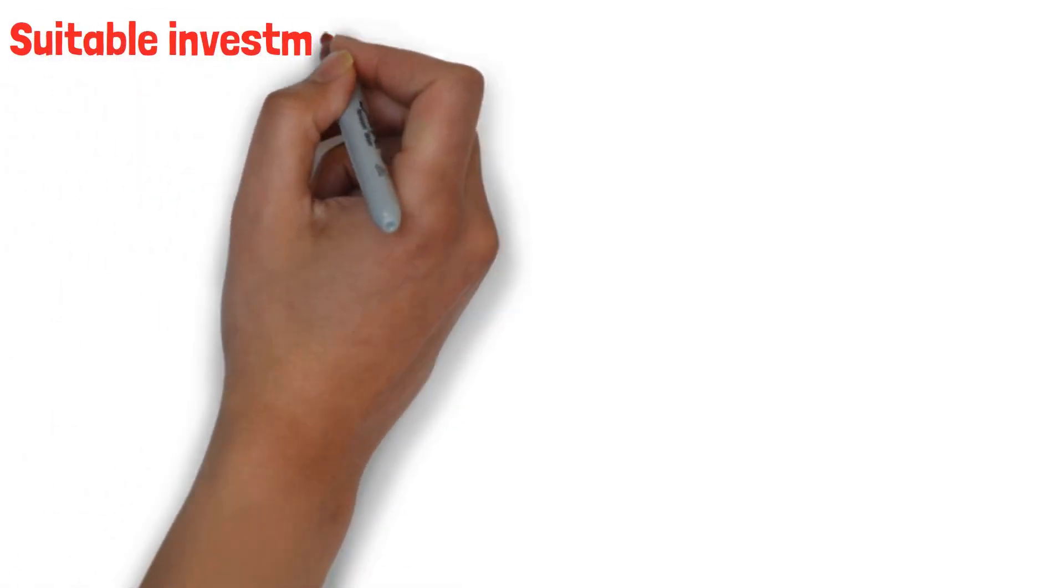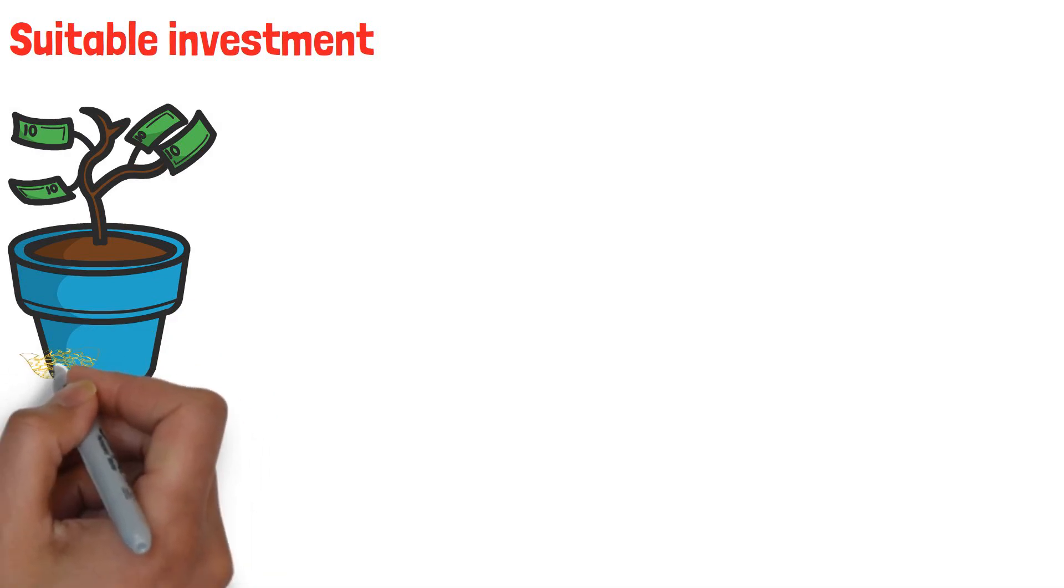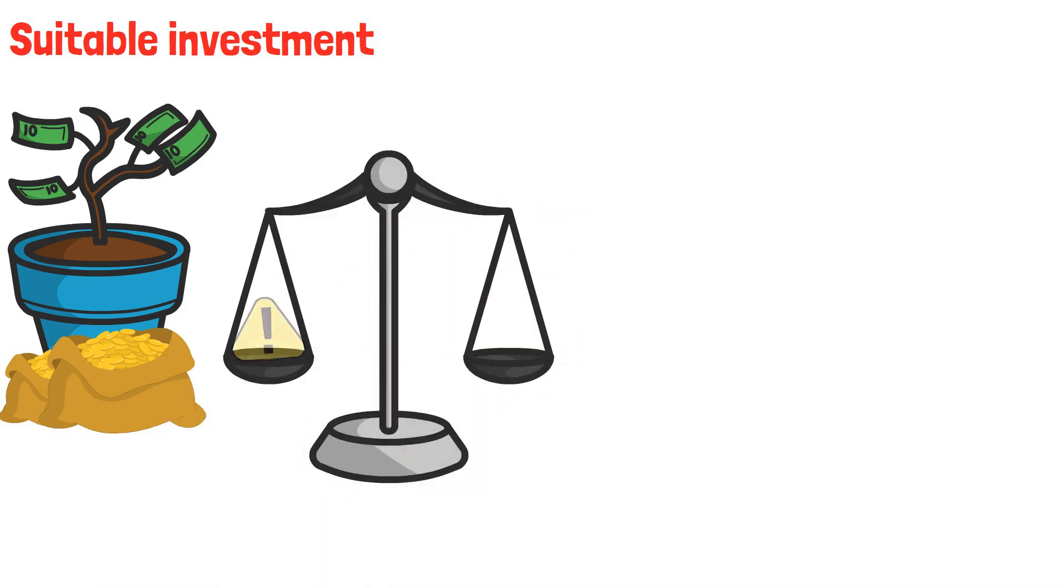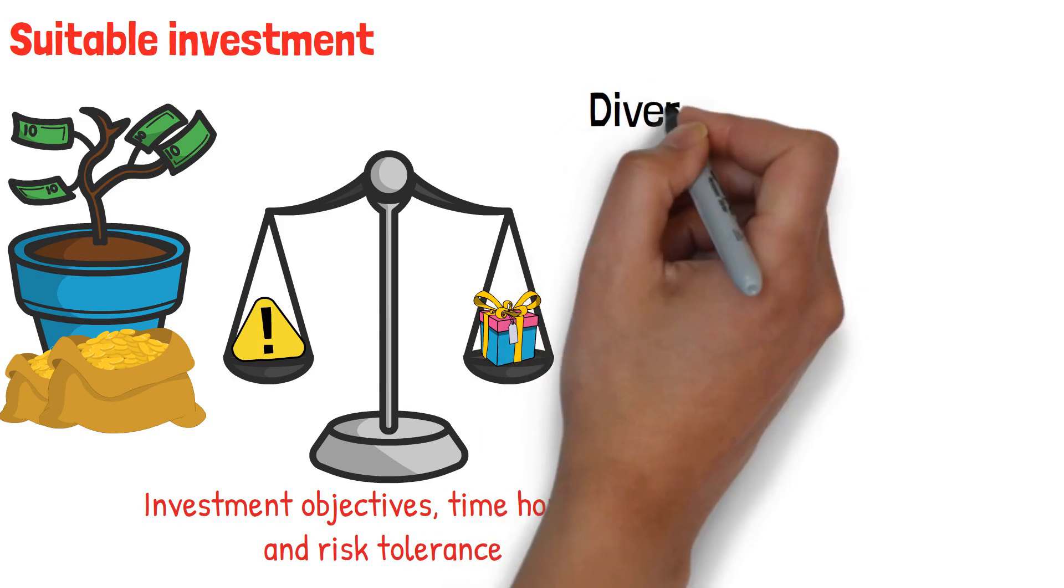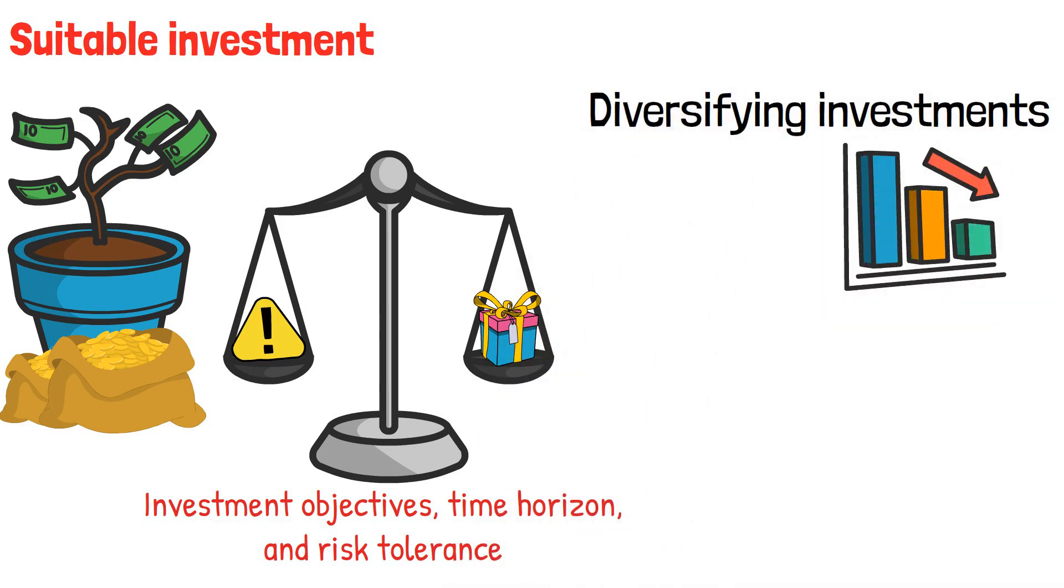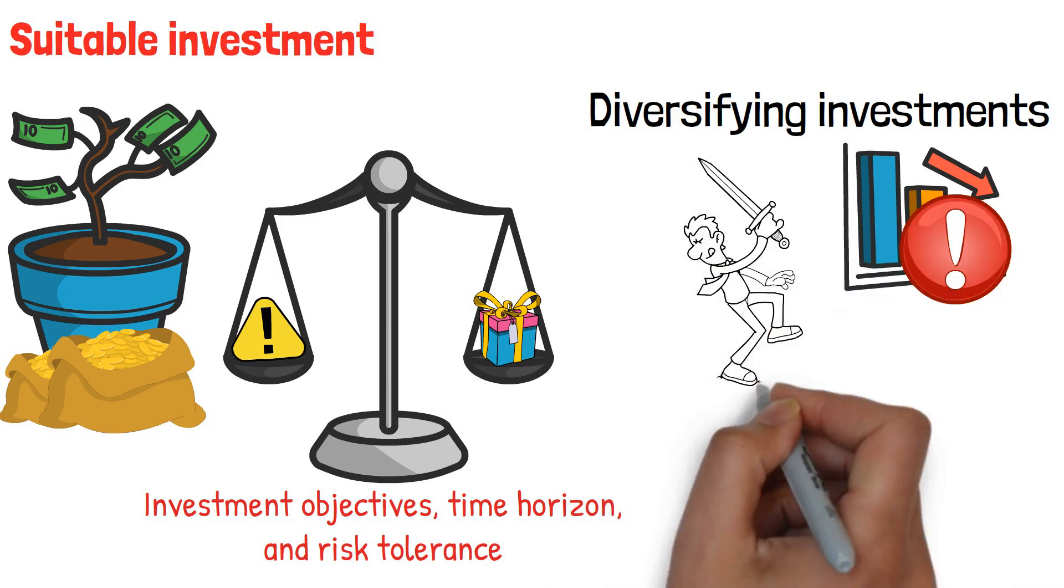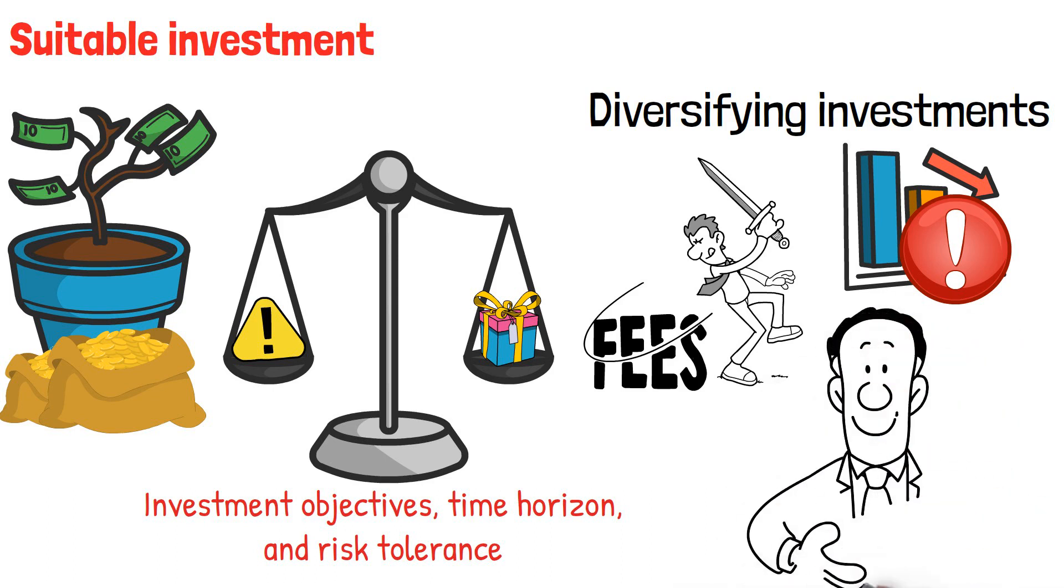The third step is to choose a suitable investment. To make compound interest work for you, select an investment that pays a higher interest rate than your savings account while considering the risks involved. This necessitates striking a balance between risk and reward corresponding to your investment objectives, time horizon, and risk tolerance. Diversifying investments across asset classes can assist in reducing risk while increasing possible dividends. It is also critical to consider the fees associated with the investment. By the power of compounding, you may boost your chances of attaining your long-term financial goals by selecting the correct investments.